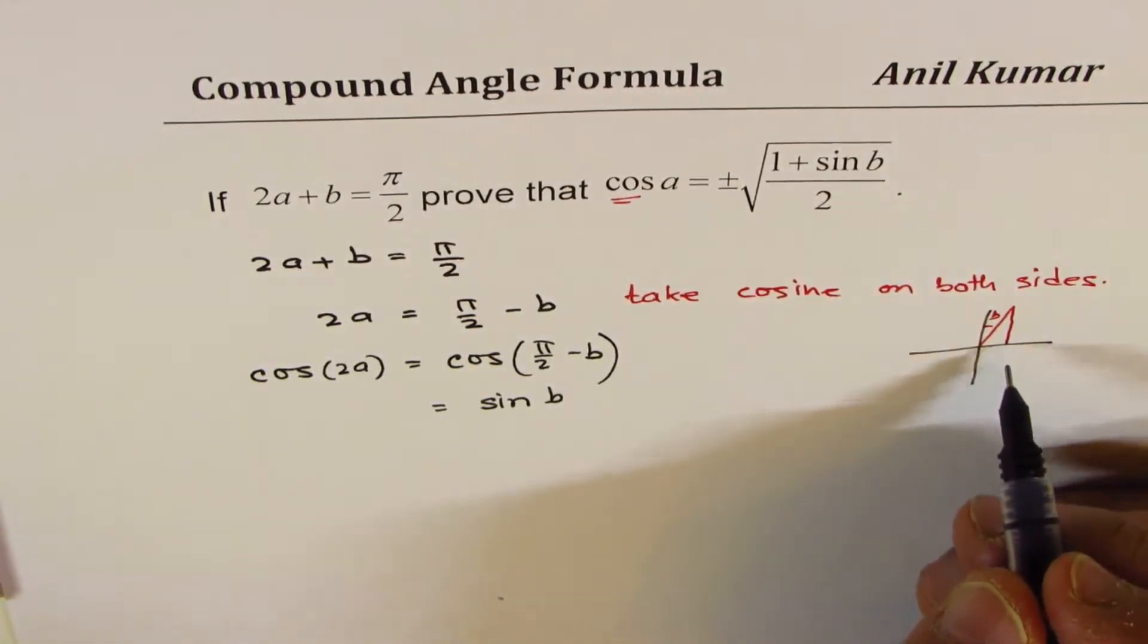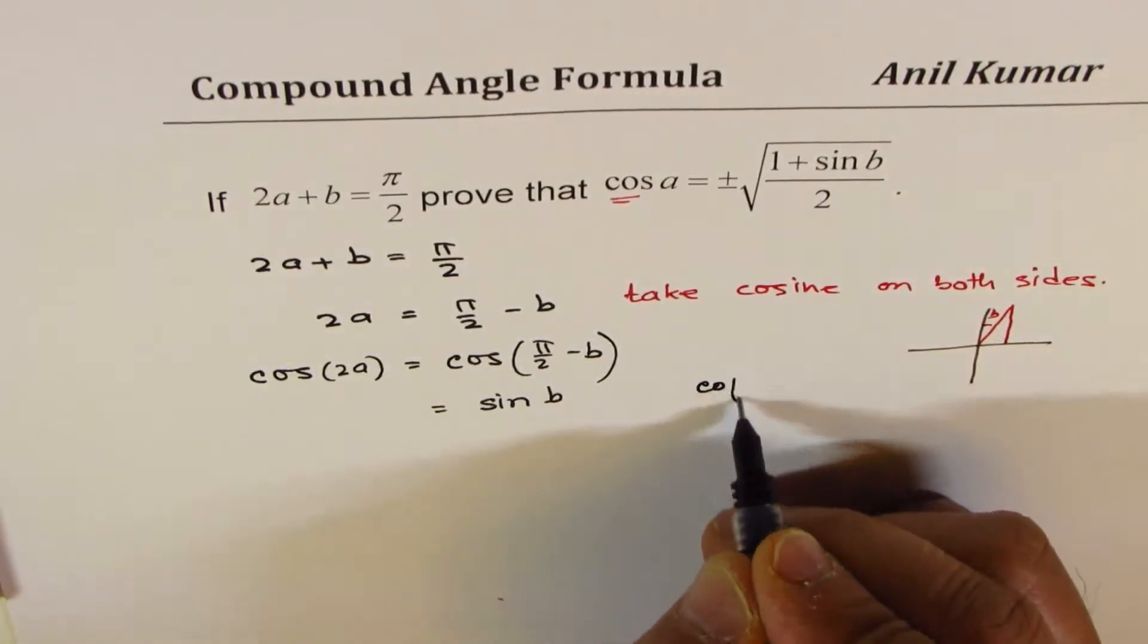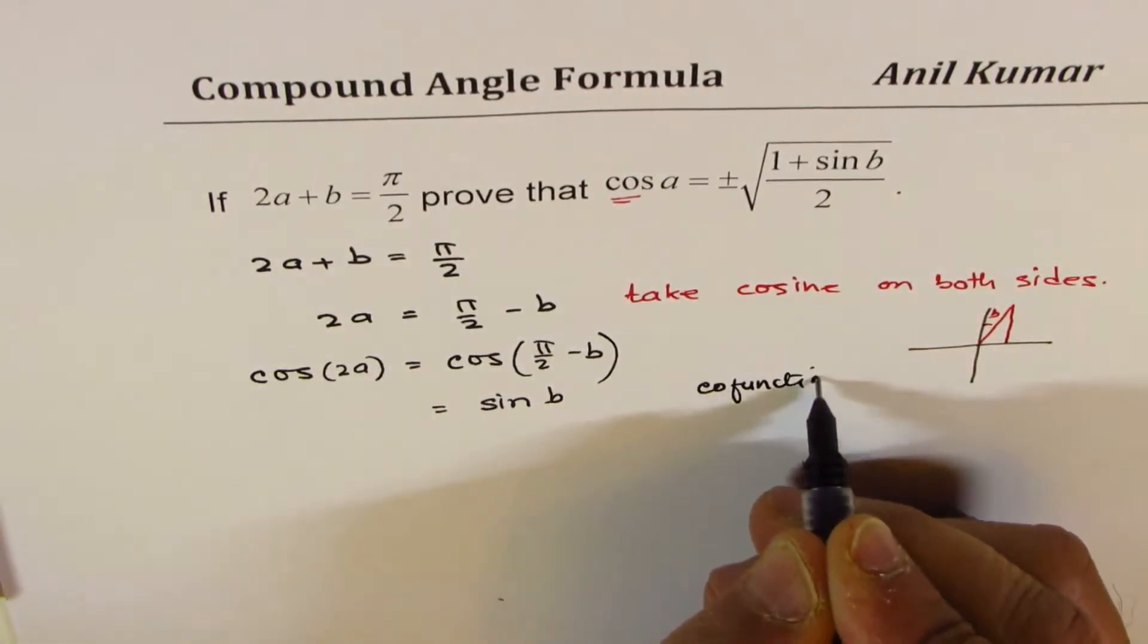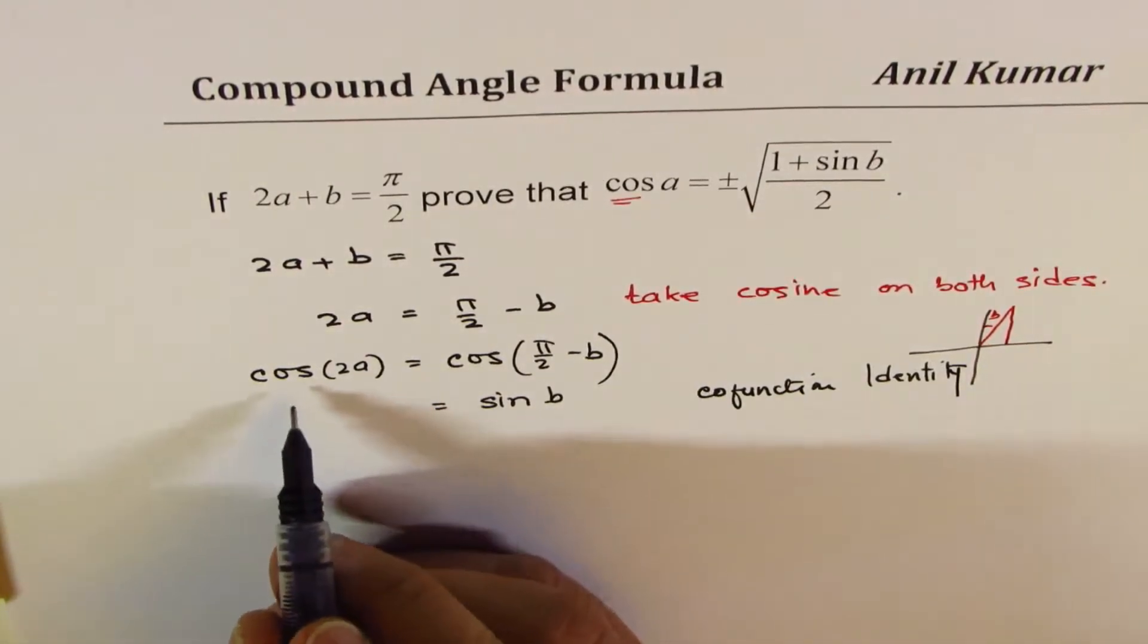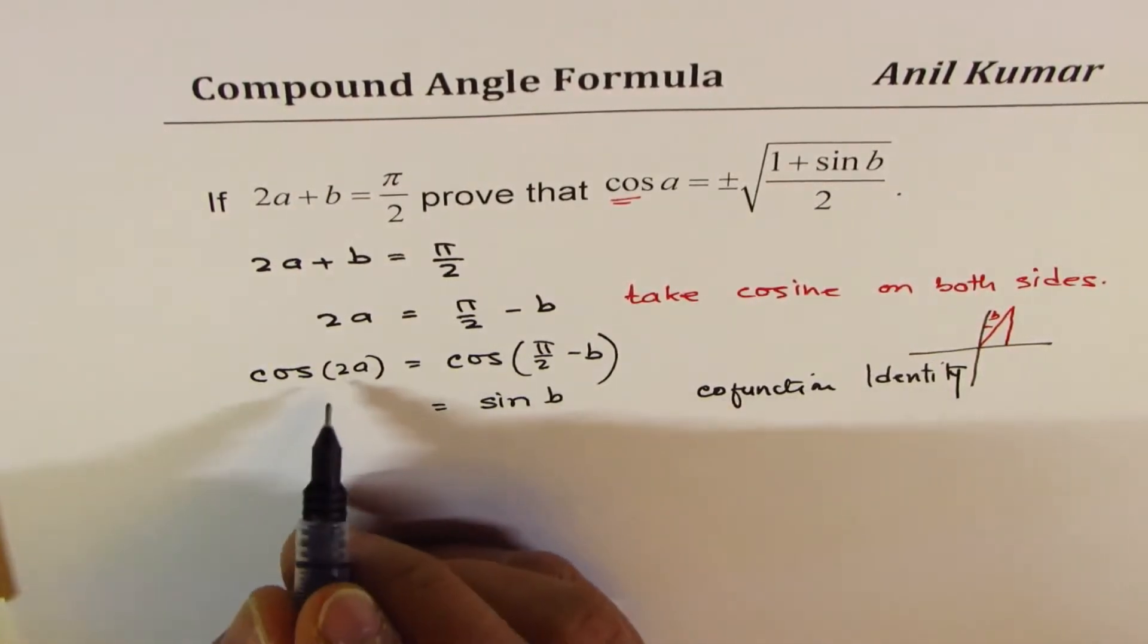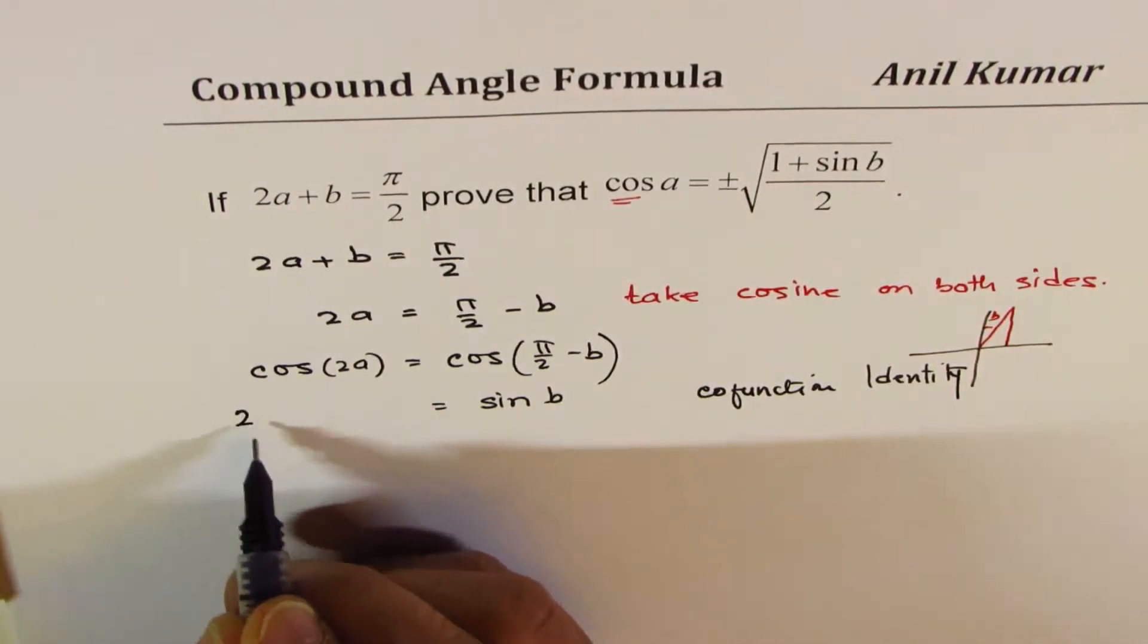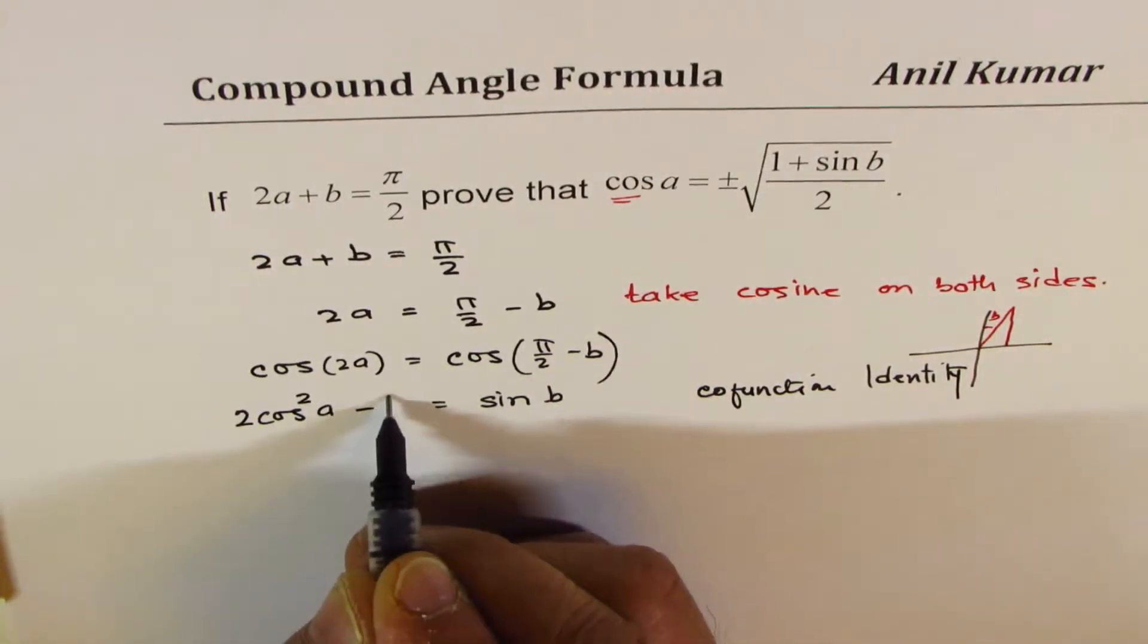Now on the left side we have a double angle form. Cos of 2a could be written as 2 cos square a minus 1. That's a double angle formula. We have applied in this particular solution so many strategies. Every step is strategic.